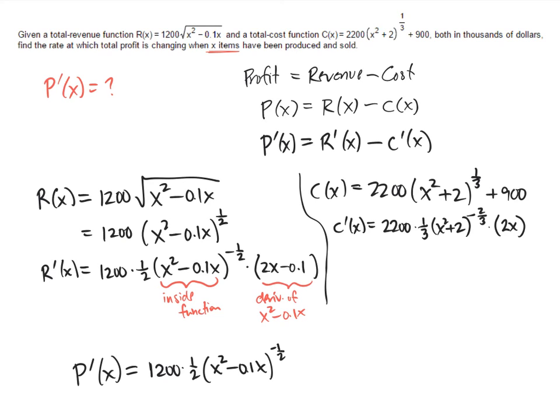So I'm just copying my two answers, and I'm going to put a big minus sign in between them because the derivative of profit is r prime minus c prime. So there's r prime that I've just written, and then minus c prime.